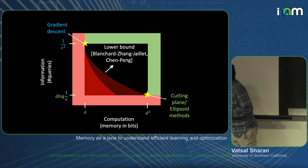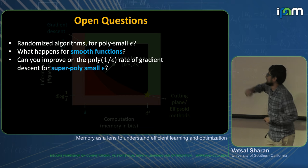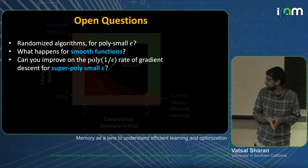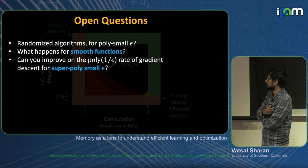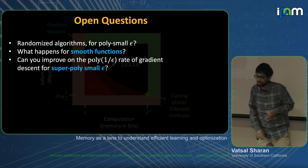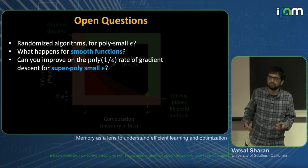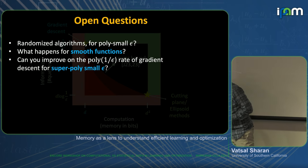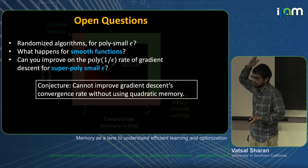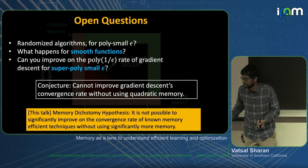There are lots of natural open questions. One is to get the D-squared lower bound for randomized algorithms for polynomially small error. It would be very interesting to understand this for smooth functions — the current construction doesn't go through for smooth functions. It would also be very interesting to see if we can show that you cannot improve on the poly(1/ε) rate of gradient descent — particularly in the linear memory regime. Gradient descent takes 1/ε² queries, and the conjecture is that you cannot improve on this convergence rate without using basically quadratic memory.